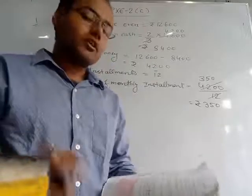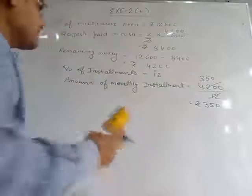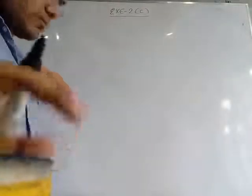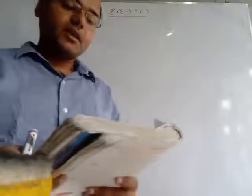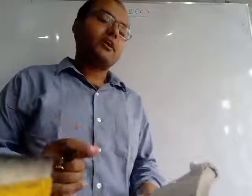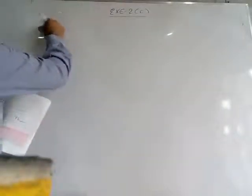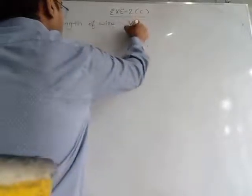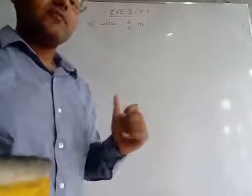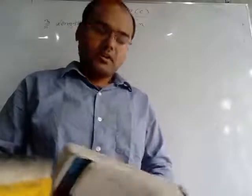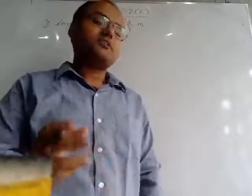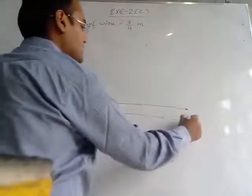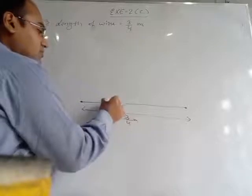Now come to question number 3. The third question: a piece of wire is 3/4 meter long. So the length of the wire is given as 3/4 meter. Suppose this is the rope — its total length is 3/4 meter. From between, we had made 3 parts.